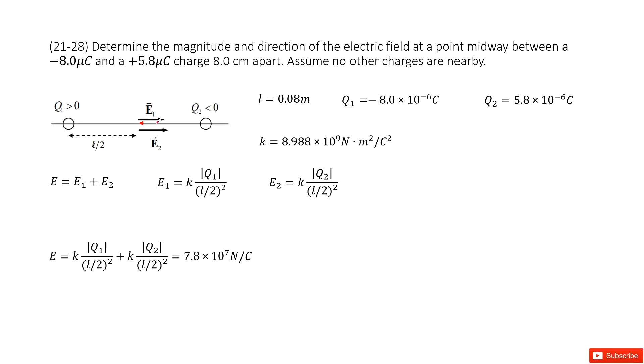And also the magnitude for E2, just k times the absolute value of q2, divided by the distance L over 2, then squared. In this way, you can use E1 plus E2 to get the final answer.